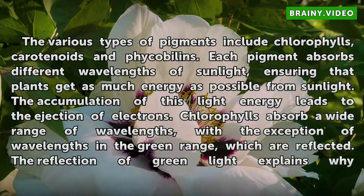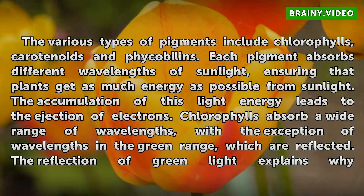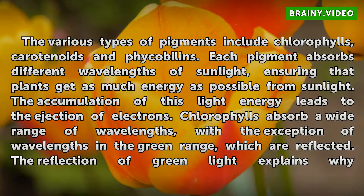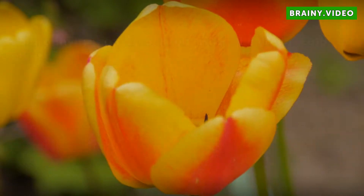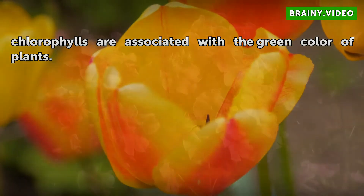The various types of pigments include chlorophylls, carotenoids and phycobilins. Each pigment absorbs different wavelengths of sunlight, ensuring that plants get as much energy as possible from sunlight. The accumulation of this light energy leads to the ejection of electrons. Chlorophylls absorb a wide range of wavelengths, with the exception of wavelengths in the green range, which are reflected. The reflection of green light explains why chlorophylls are associated with the green color of plants.